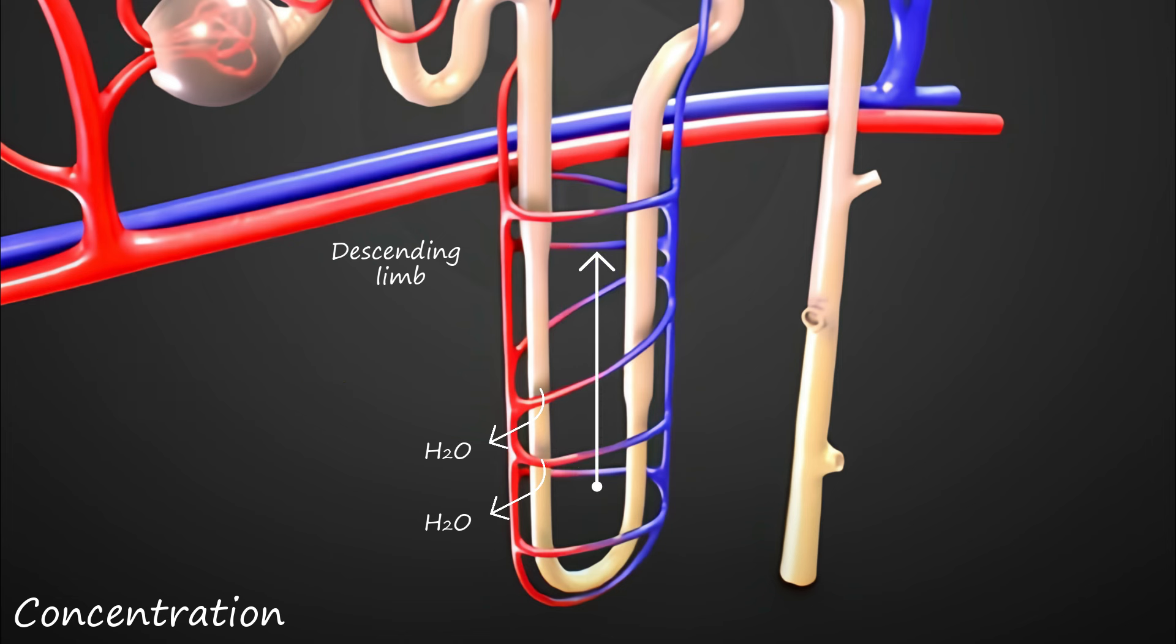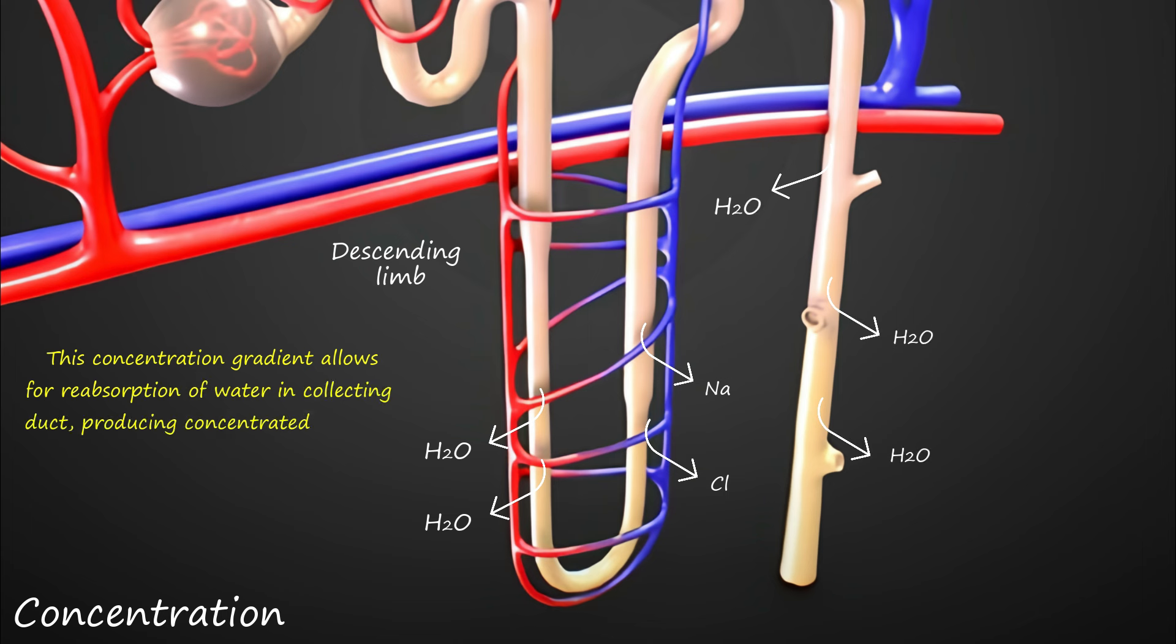In the ascending limb, sodium and chloride ions are actively pumped out of the tubule, further concentrating the filtrate. This concentration gradient allows for the reabsorption of water in the collecting duct, producing concentrated urine and conserving water in the body.